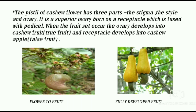The pistil of the cashew flower has three parts: stigma, style, and ovary. It is a superior ovary born on a receptacle which is fused with the pedicel. When fruit set occurs, this ovary develops into a cashew fruit, which is called the true fruit.